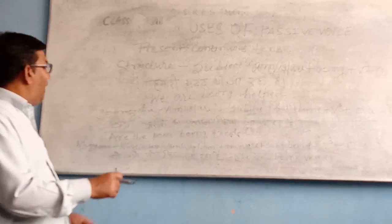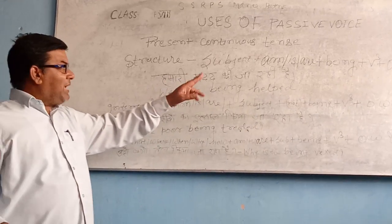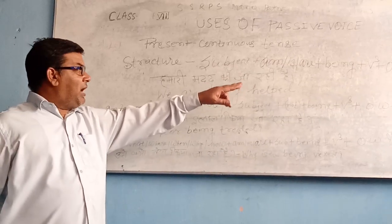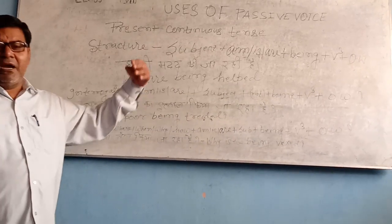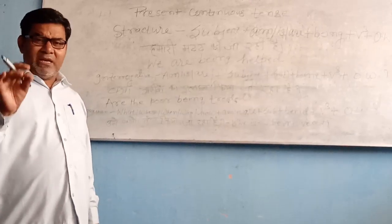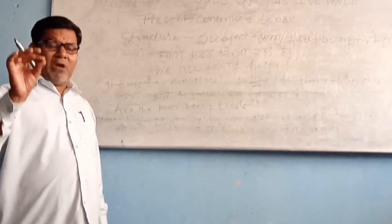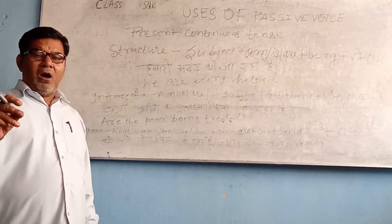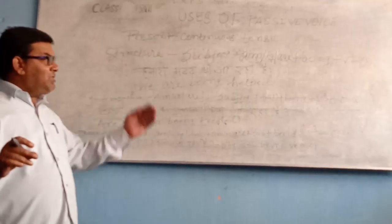अब देखें इसका structure: Subject + am/is/are + V1 + ing। इसको समझेंगे — विद्यार्थियों को पहले भी बताया जा चुका है कि was, were, और will/shall का प्रयोग tense के अनुसार किया जाता है।